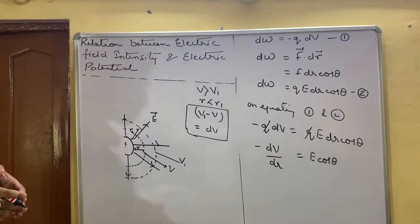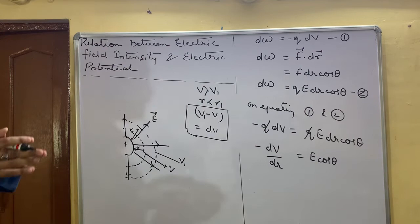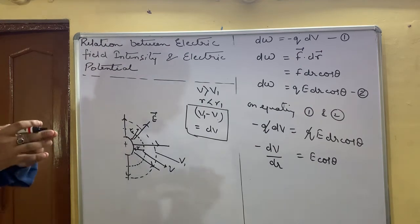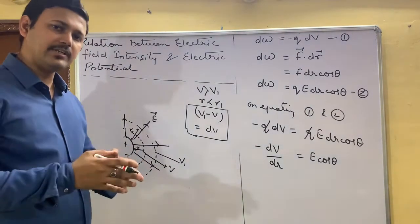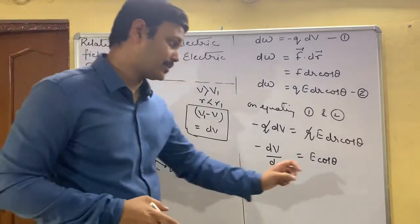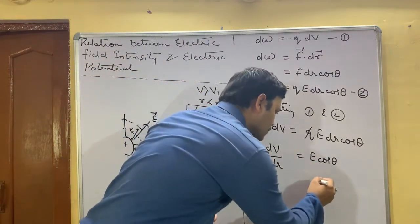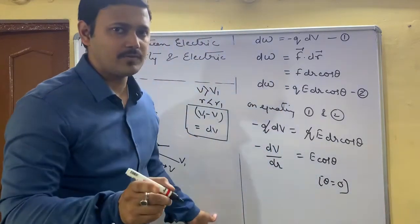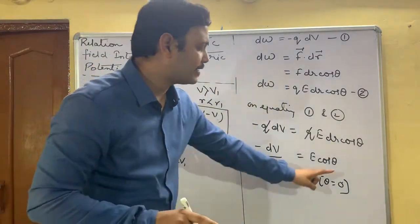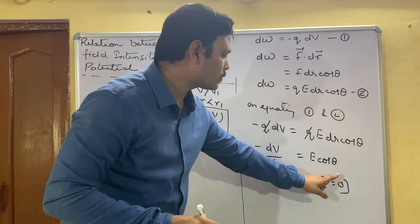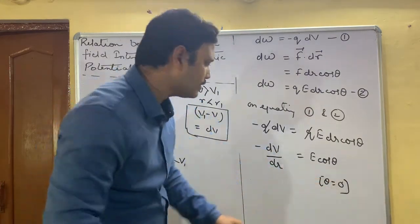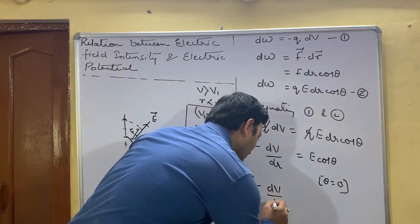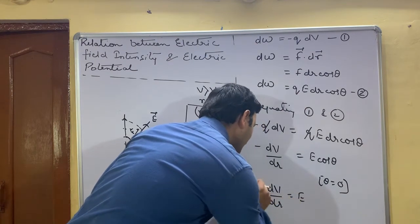Now suppose if we are moving in the direction of electric field, then this theta will be equals to 0 degree. So cos theta will be equals to 1 and hence we will get minus dV upon dr equals to E.